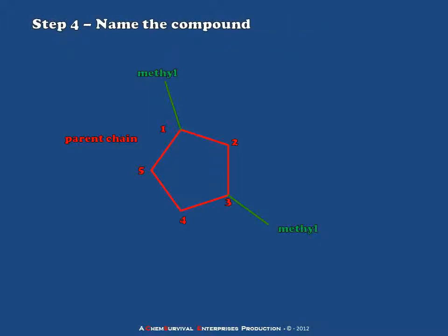The final step is to name the compound using the IUPAC convention. We'll name the parent chain, indicating that it is cyclic by calling it a cyclopentane. Then we'll insert the prefix for our dimethyls and their positions. So we have a 1,3-dimethylcyclopentane.